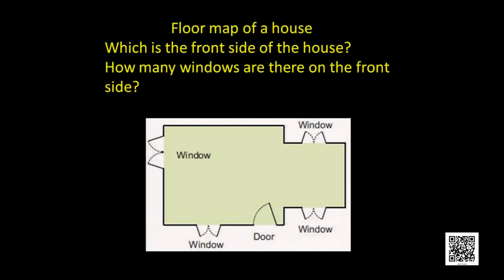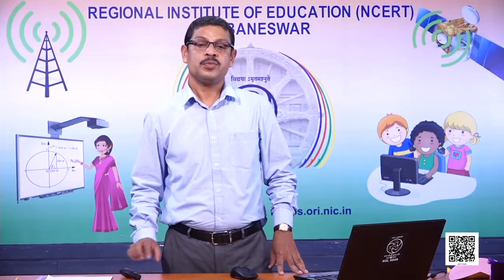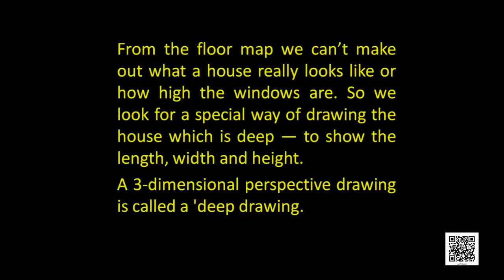How many windows are there on the front side? If this is the front side, see — there are two windows here. From the floor map, we can't make out what a house really looks like or how high the windows are. So we look for a special way of drawing the house which is deep. We call it a deep drawing, to show the length, width, and height. A three-dimensional perspective drawing is also called a deep drawing.